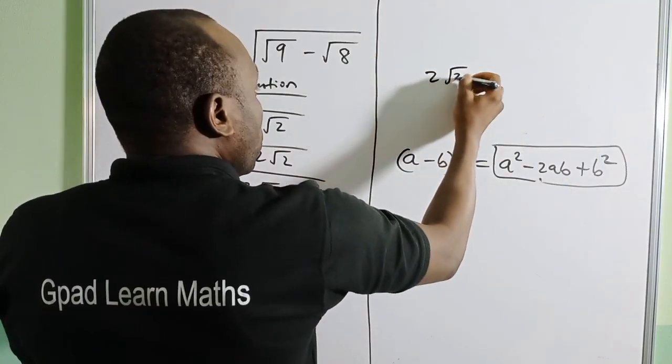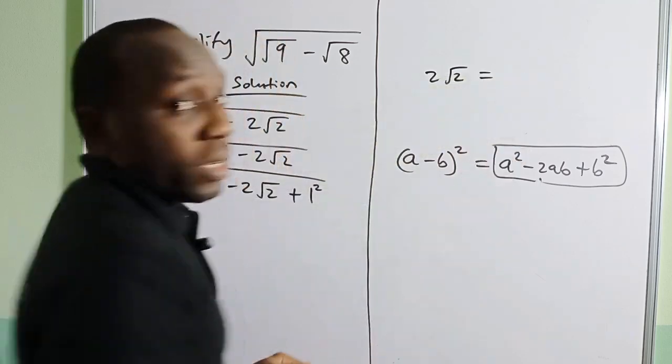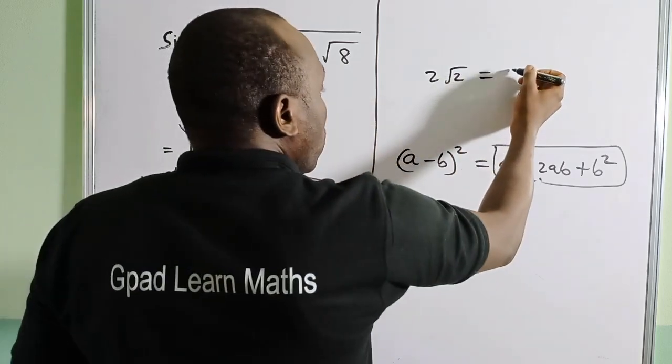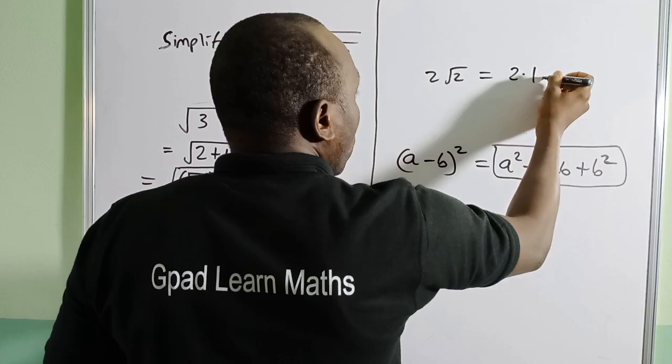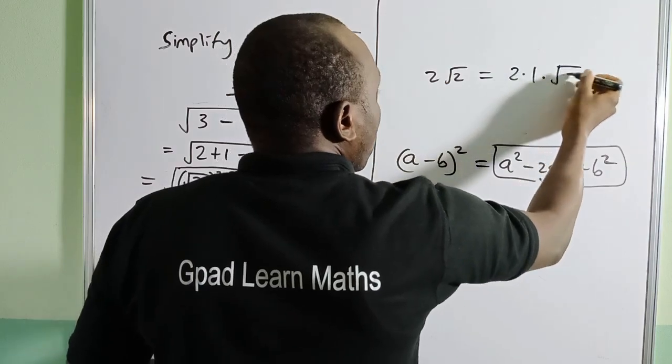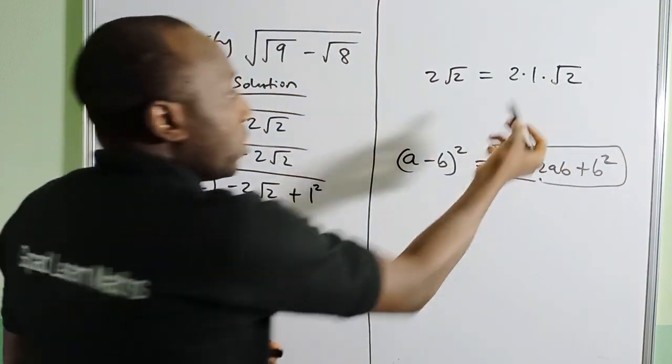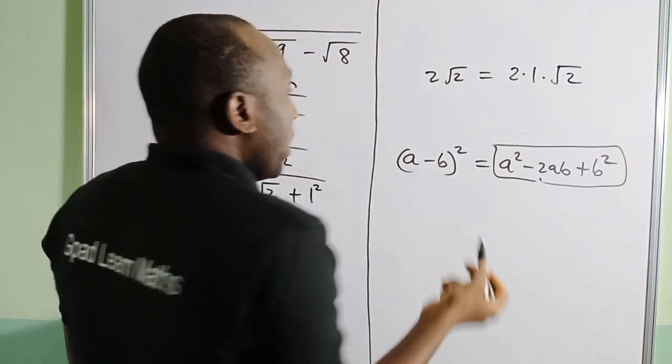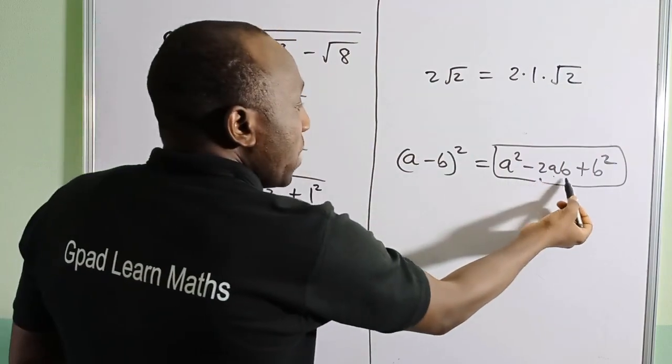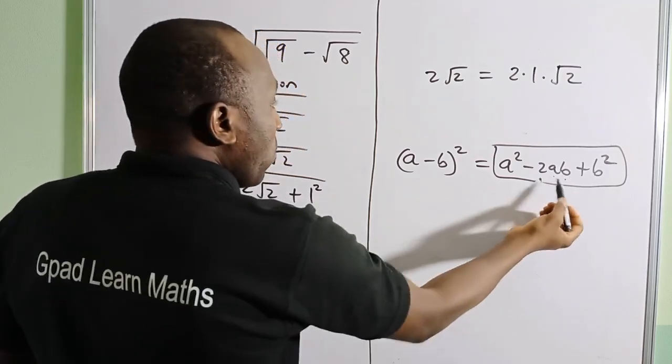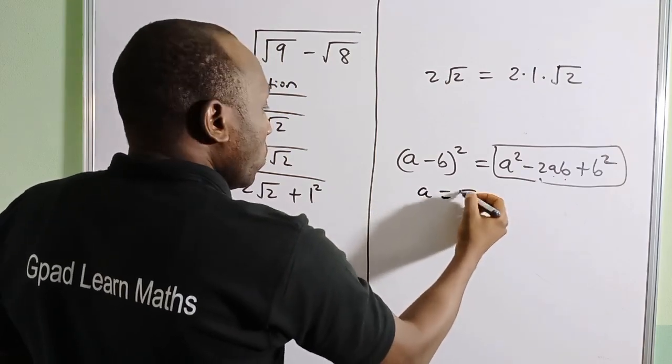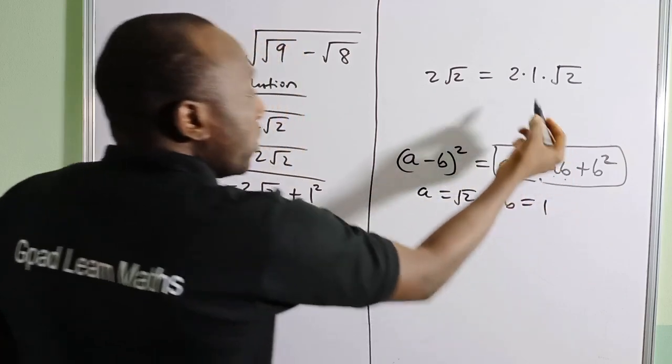This 2√2 can be expressed as 2 · 1 · √2. It's the same thing: 2 times 1 is 2. Now if you watch, this is 2ab.